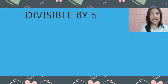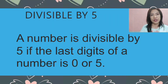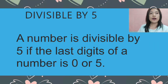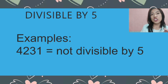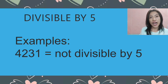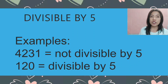Let's proceed to divisible by 5. This is just easy — if a number's last digit is 0 or 5, it is automatically divisible by 5. Example: 4,231 is not divisible by 5 because the last digit is 1. Another example: 120 — it is divisible by 5 because the last digit is 0.